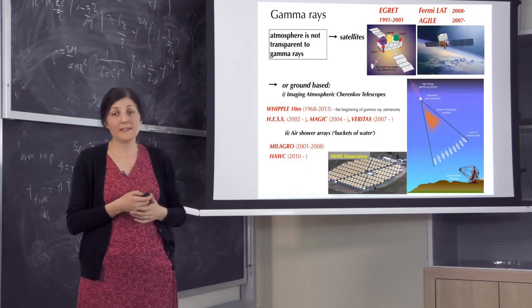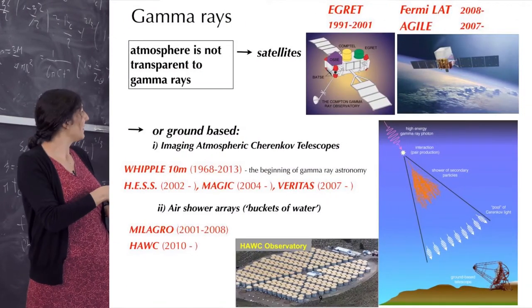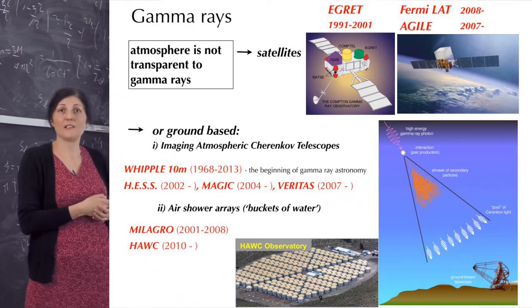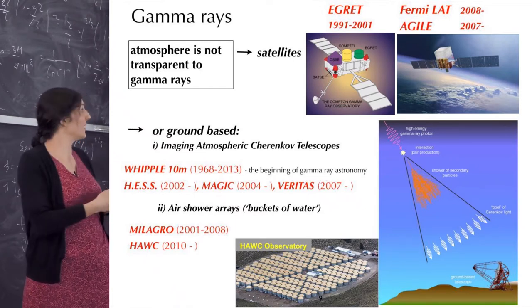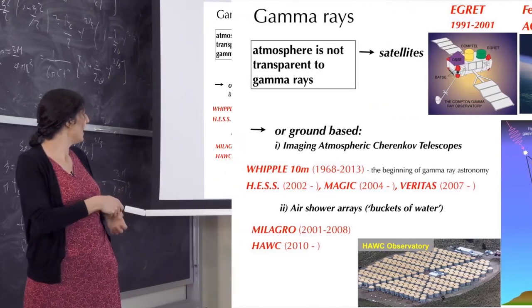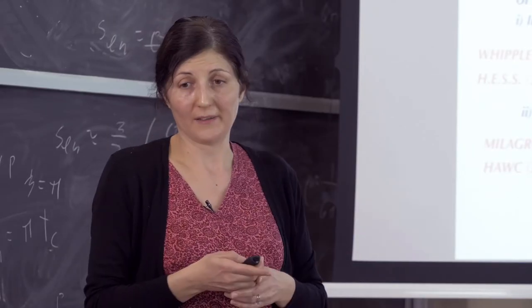Gamma rays, as you know, cannot cross the atmosphere. When they arrive to the atmosphere, they produce particle showers. So there are two strategies to look for gamma rays: one is to go above the atmosphere to look via satellites, and one is to look on the ground. I will focus on this satellite experiment, which is called Fermi-LAT.